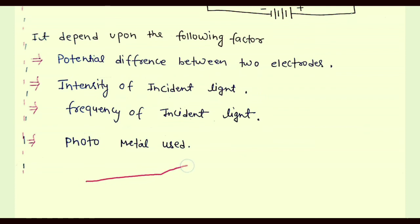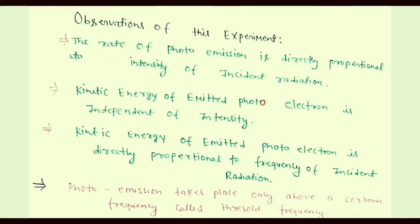Now, let us see the variation of photocurrent with respect to metal used. Photocurrent also depends upon the photometal used. If the metal has less work function, it will result in more current. If it has more work function, it will result in less photocurrent.